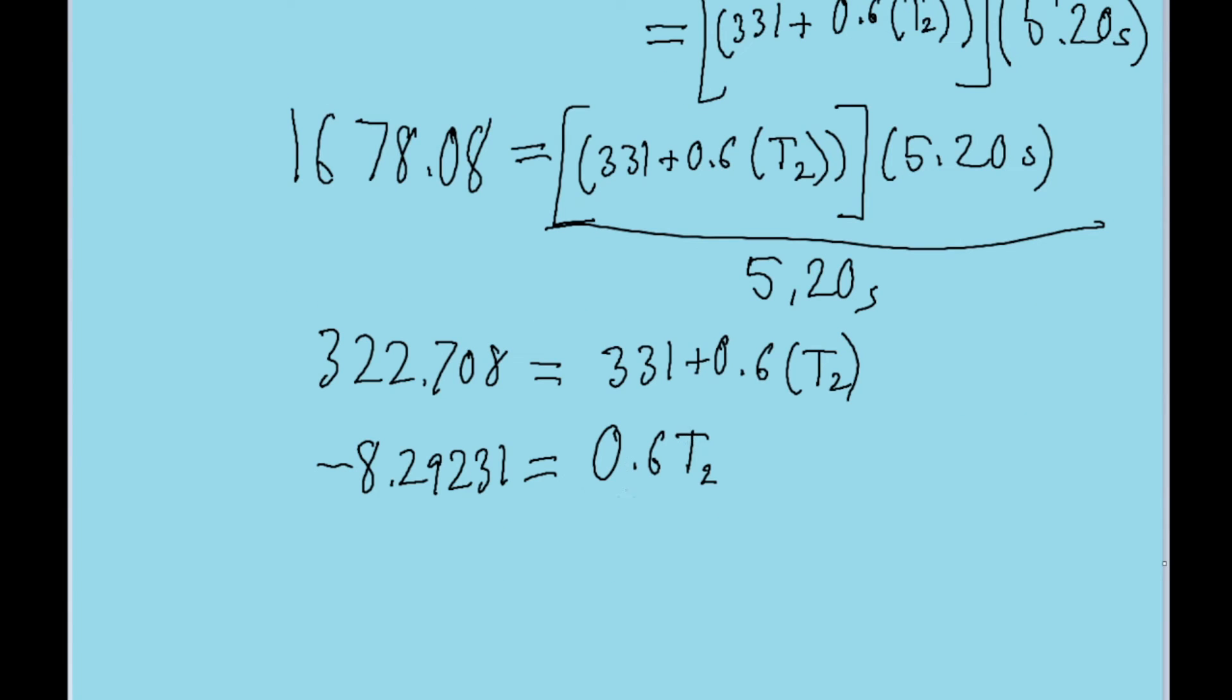Finally, to get T₂ on its own, divide both sides by 0.6. We find that T₂ is about -13.82°C. Some might round this to -14°C, but we'll leave it as is.